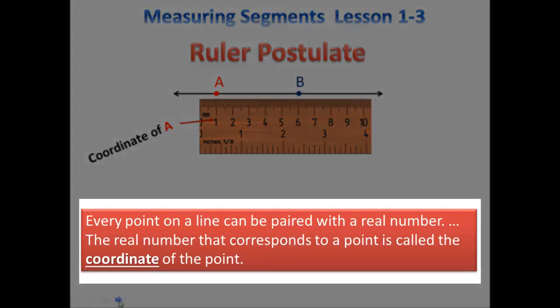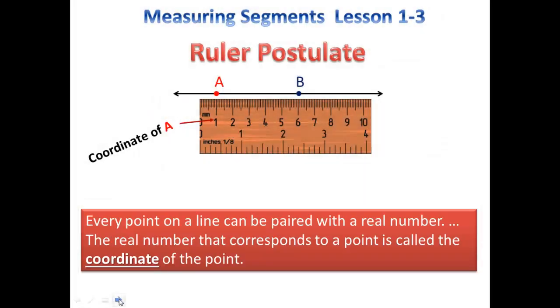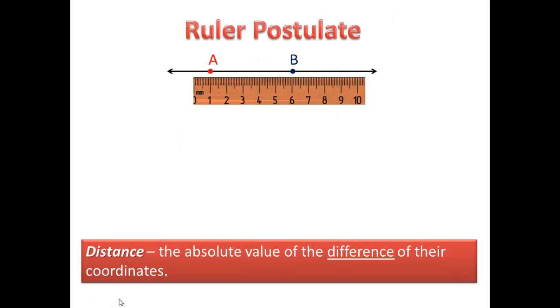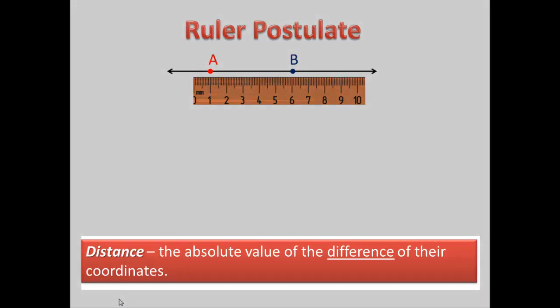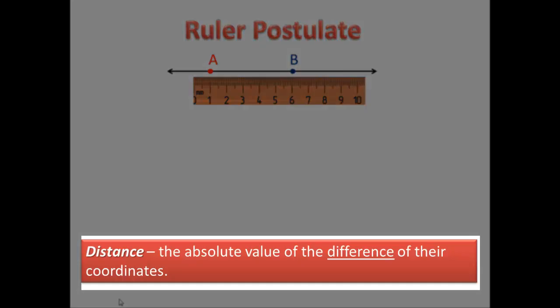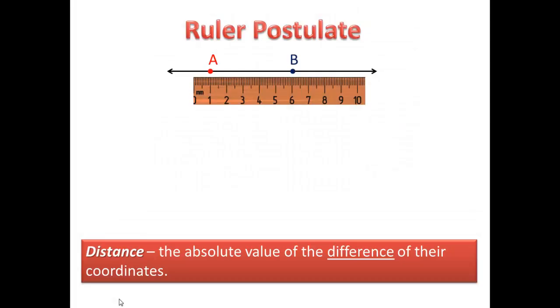Now we're going to talk about finding the distance between these two points. We do this by taking the absolute value of the difference of their coordinates. Difference just means subtraction.